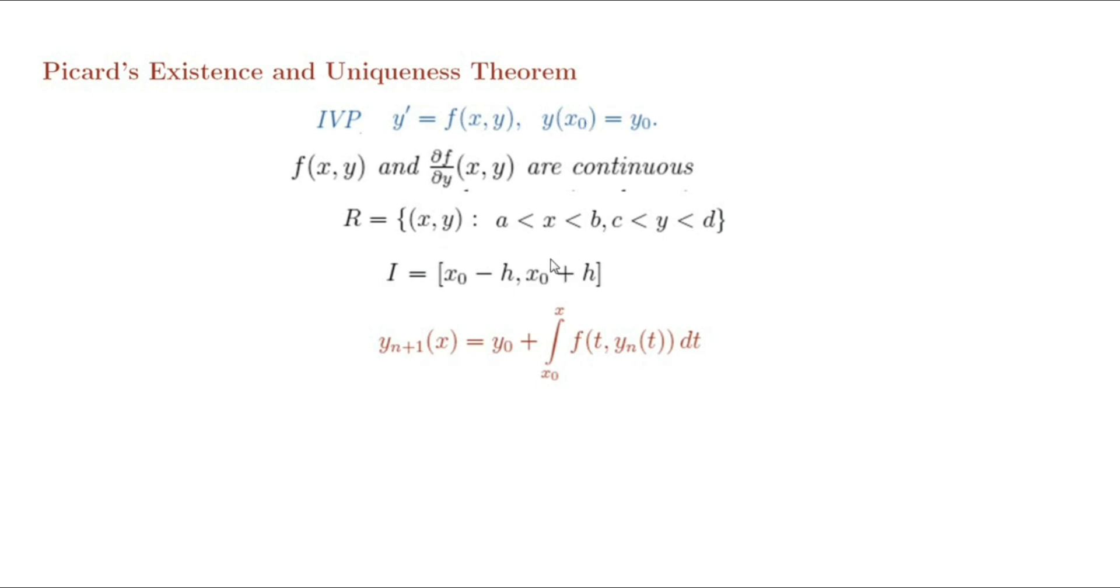For this, let us consider an example. Here, the initial value problem: y' equals 3y^(2/3), y(2) is equal to 0.